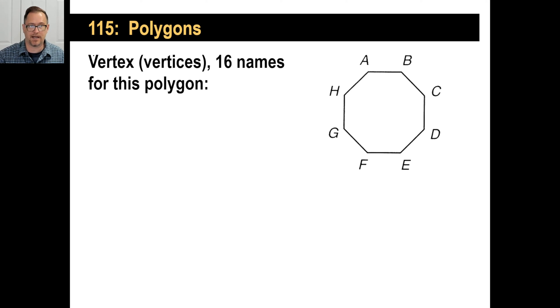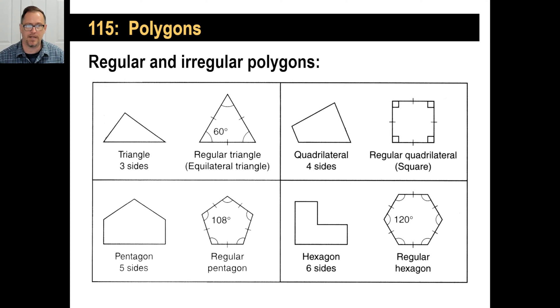The word vertex, you should be familiar with - that's like the corner. The word vertices is the plural of vertex, not vertexes, vertices. And you can name this polygon - good heavens - there's 16 different names because there are eight different vertices on this. You could name this polygon A, B, C, D, E, F, G, H, or you could say it's polygon B, C, D, E, F, G, H, A, or C, D, and so on. You could go A, H, G, F, E. You could go F, E, D. Don't bother to do all those, but you can name the different things as long as they are in order as you name them.